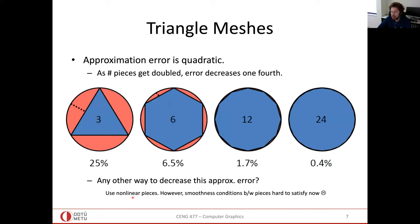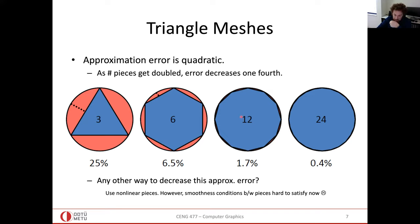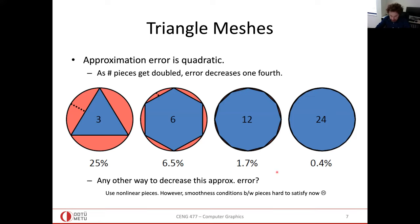You may ask why we don't use nonlinear pieces instead of linear ones. It is possible to use Bezier patches, NURBS, or splines, but the linear approach is simpler and more effective because there is no concern about the connection points. Smoothness conditions between pieces are easy to satisfy naturally, especially with many pieces. With nonlinear pieces, connecting them is challenging and requires extra work.